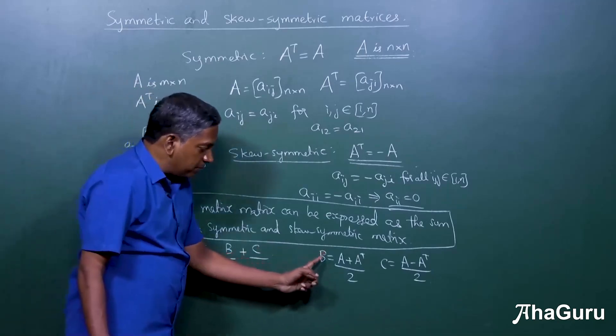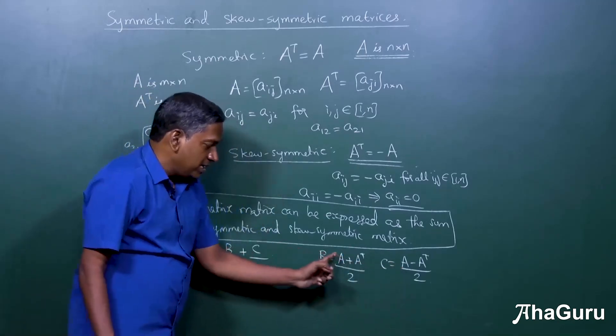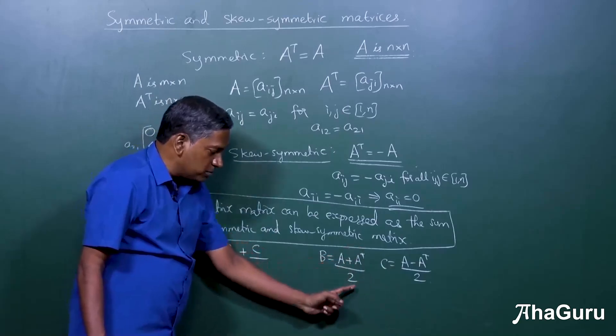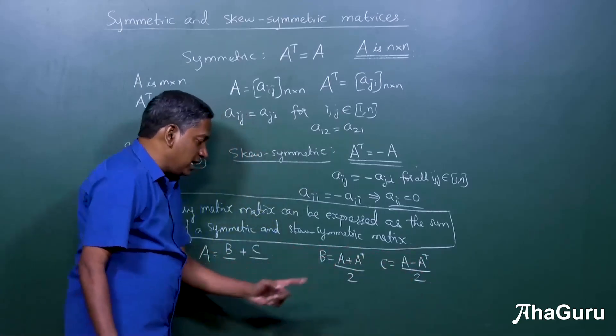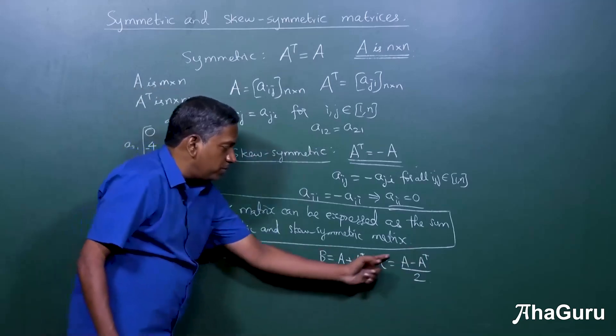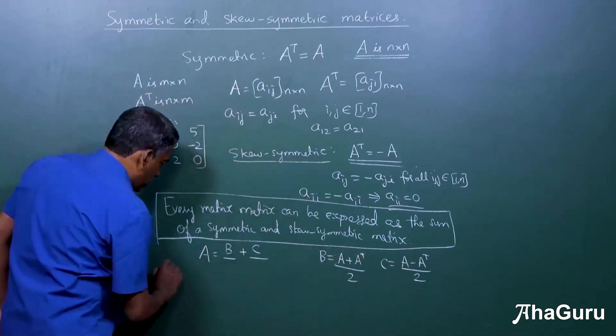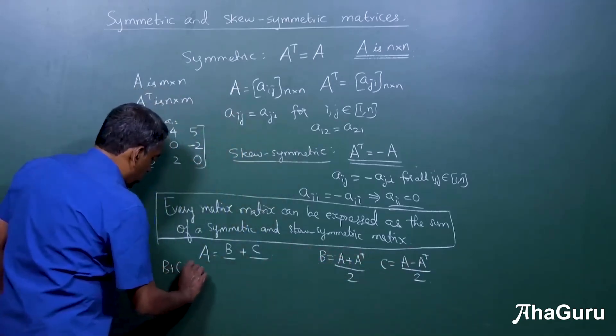Well, first let's verify what happens if you do B plus C. It's A by 2, it's A by 2, A transpose by 2, A by 2 and minus A transpose by 2. So clearly B plus C is equal to A by 2 plus A by 2 equals A. B plus C is equal to A is verified.